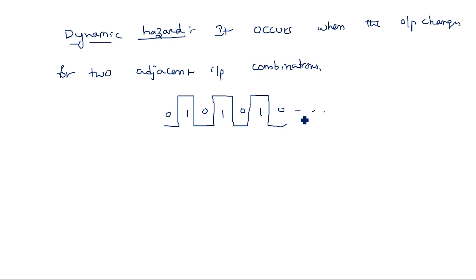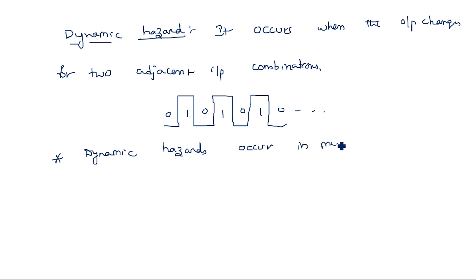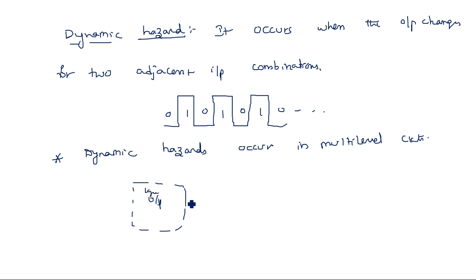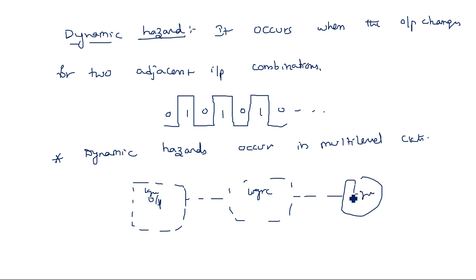Dynamic hazards occur only in multi-level circuits — this is a very important point. Multi-level circuits means having multiple stages: one small logic circuit whose output is fed into another logic circuit, and that output is fed into yet another logic circuit. When we have this type of multiple levels, dynamic hazards may occur.